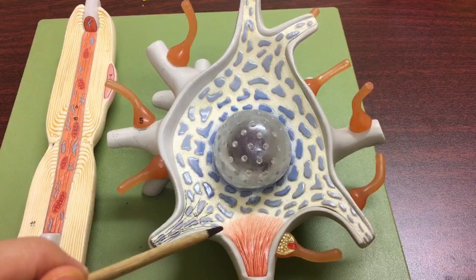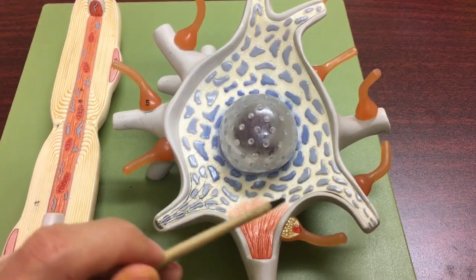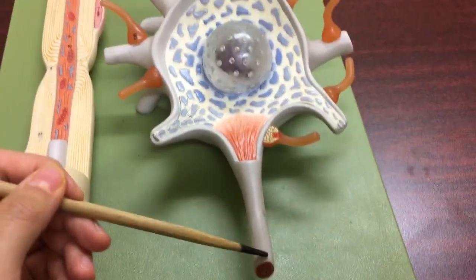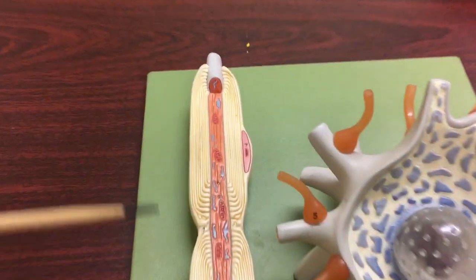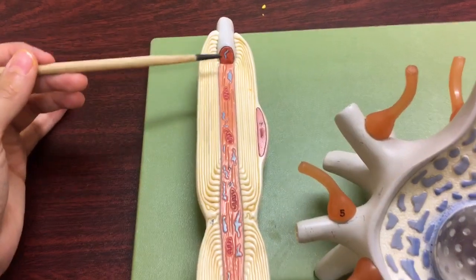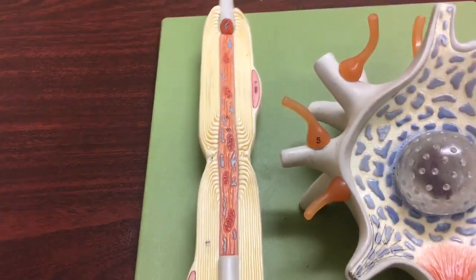This is called the axon hillock. This is the beginning portion of the axon, but they couldn't fit it on this model, so this is the rest of the axon as you can see.